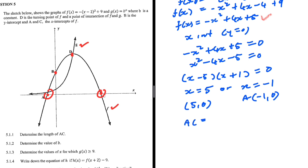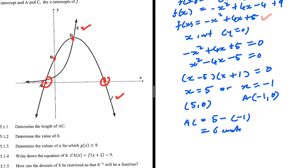So AC equals 5 minus (minus 1), which is 6 units. We know that from the origin to c is 5 units, and from a to the origin is also 1 unit because a is minus 1. So 1 plus 5 equals 6. That is 5.1.1 done correctly.